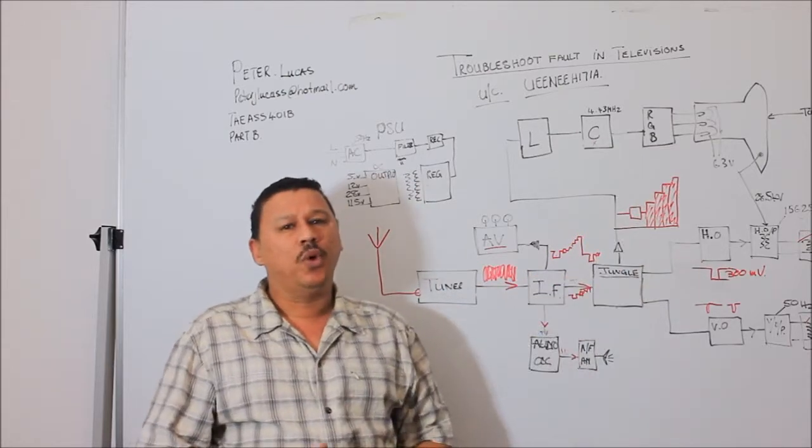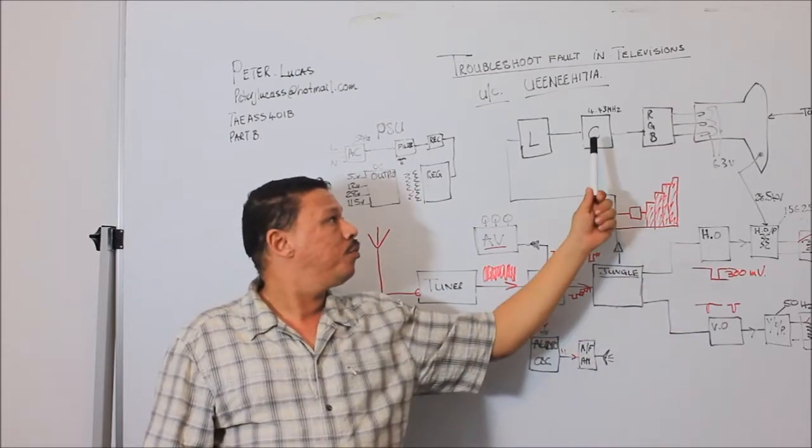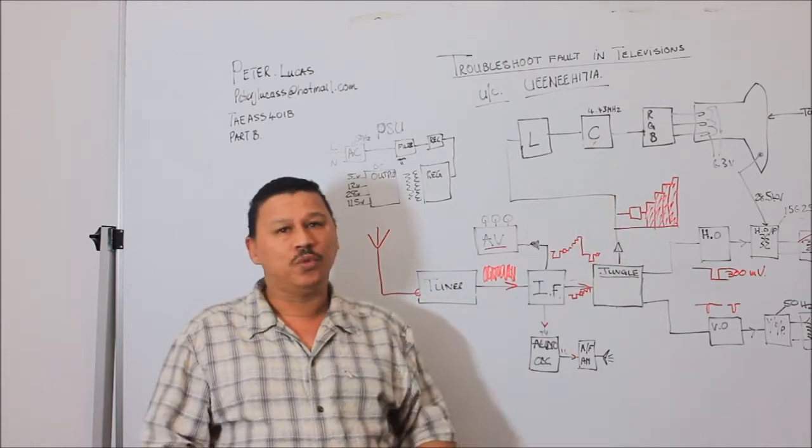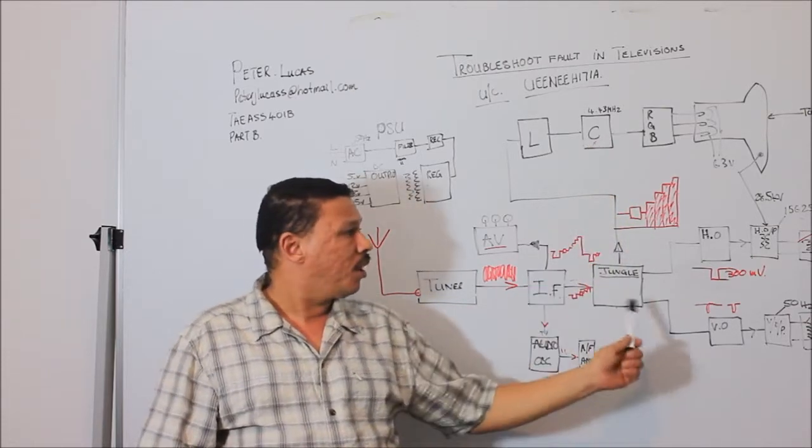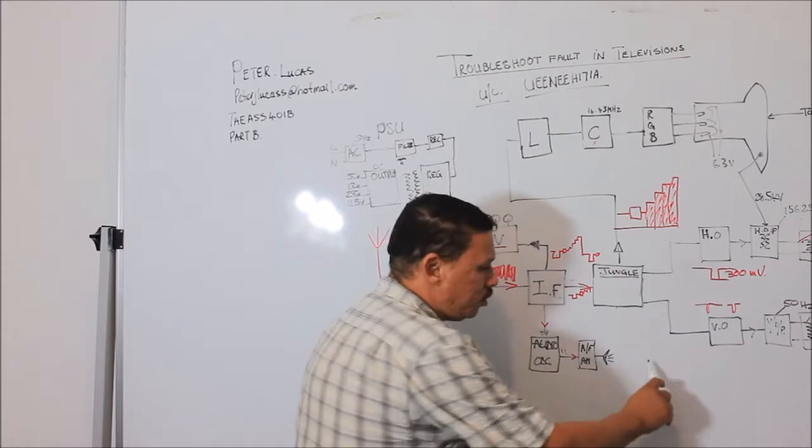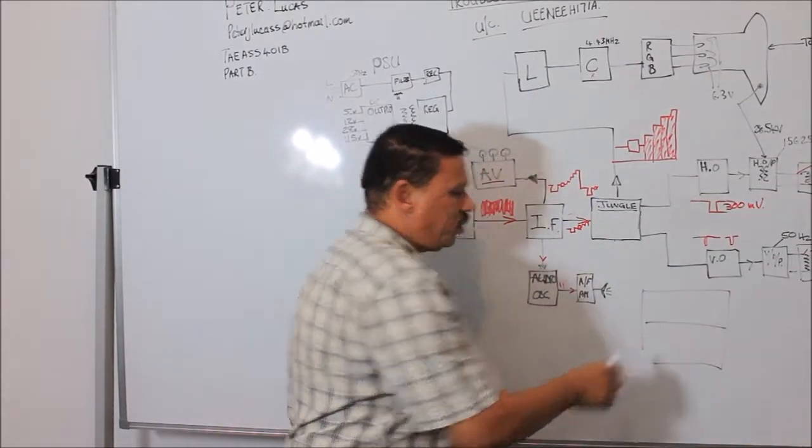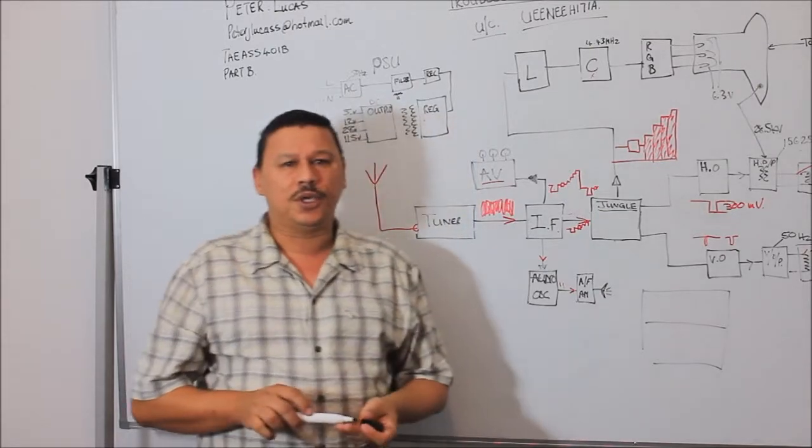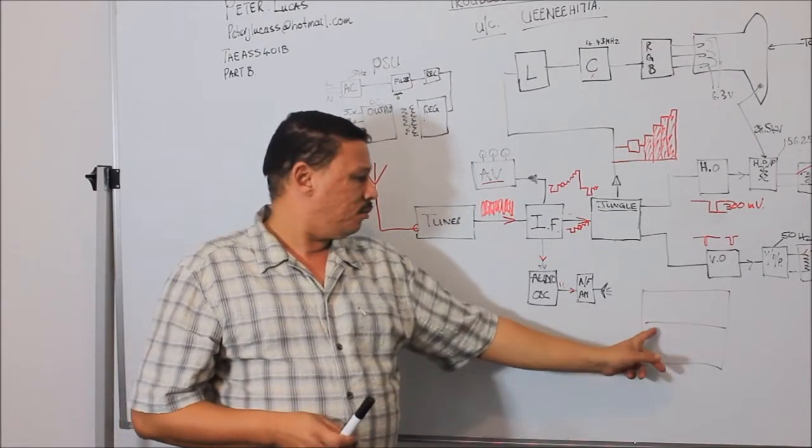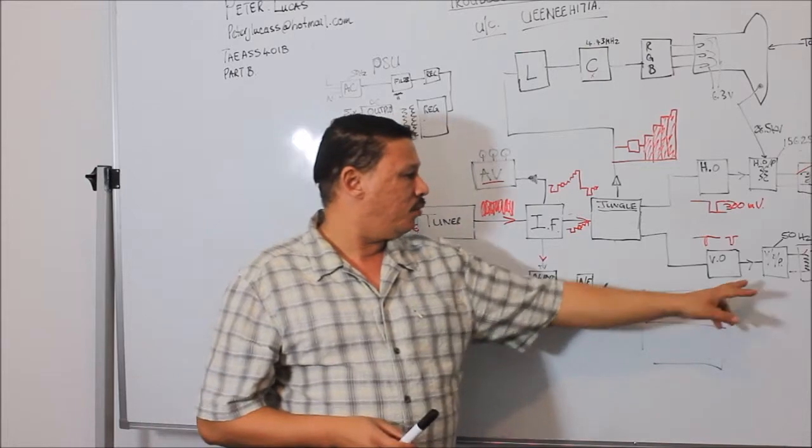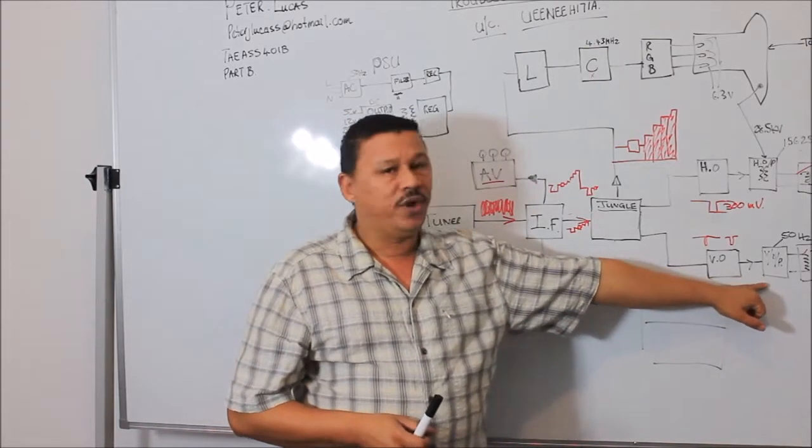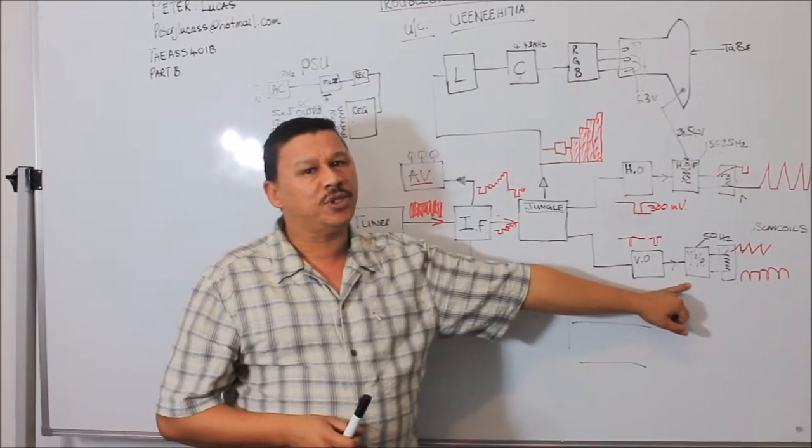If you have a black and white television and you have a situation where there is a, let's just draw a little picture. There's just a one silver line across the screen. This indicates that you have a fault in the vertical circuit or the frame circuit.